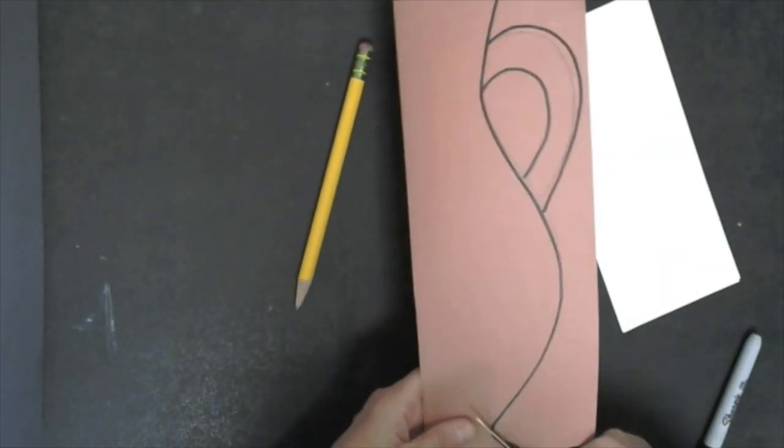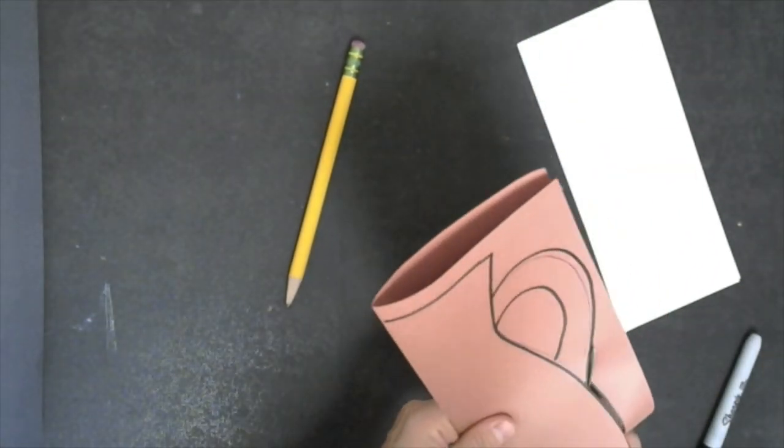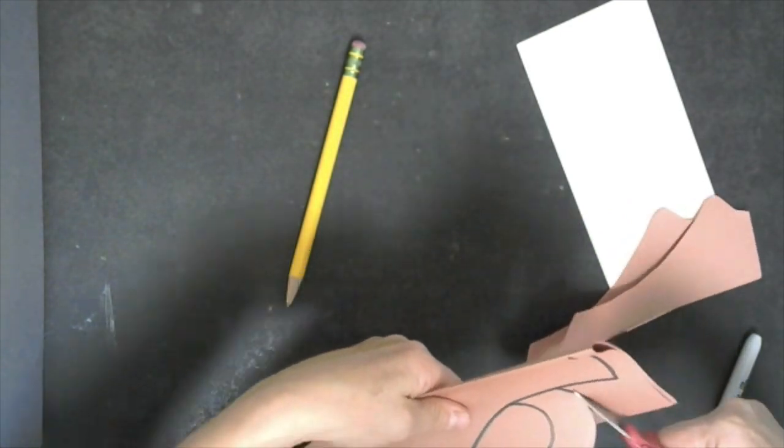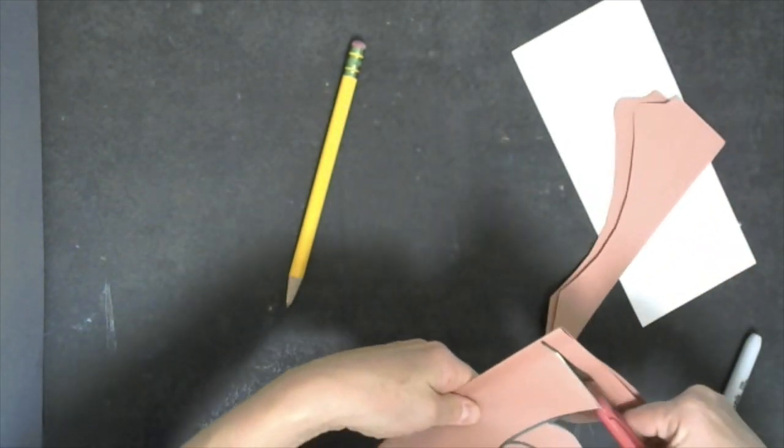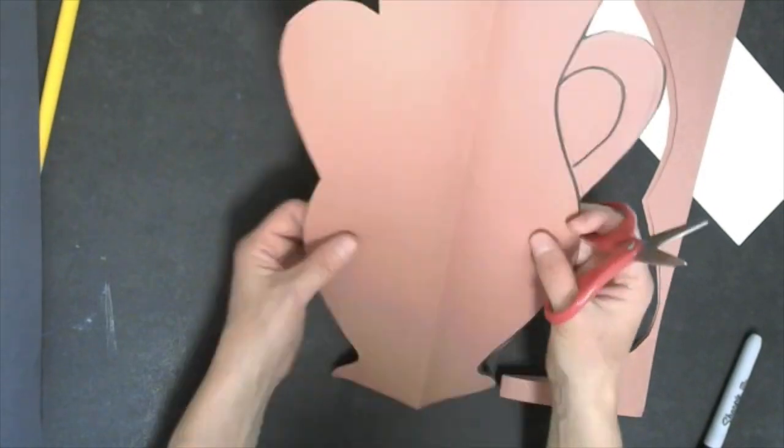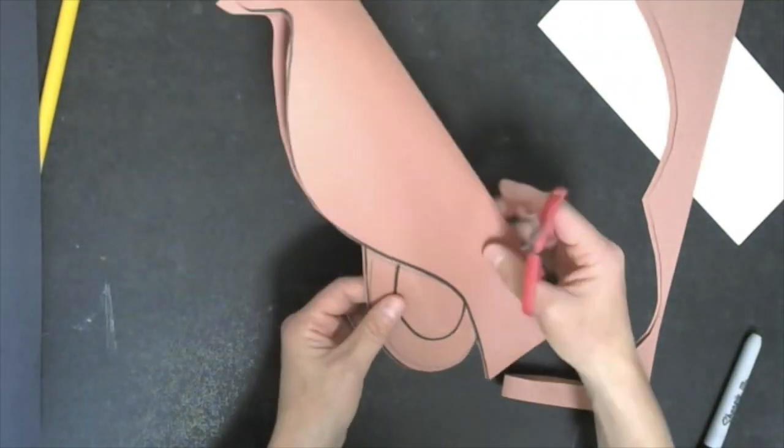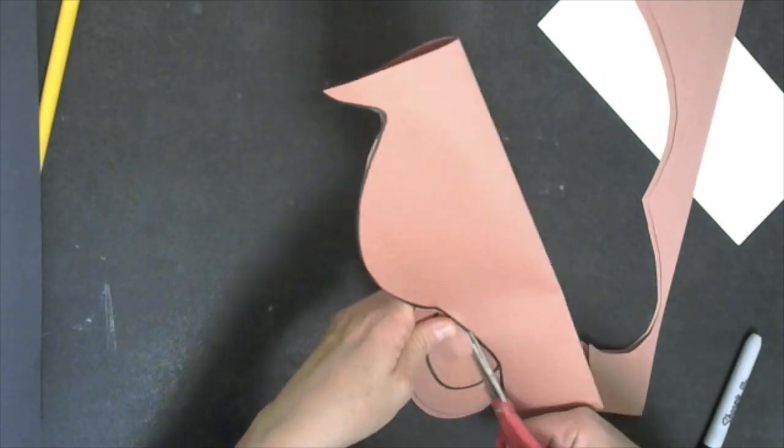We're going to fast forward this a little bit. You're going to cut this out and this is why it was important to make sure that you start on that fold so that you don't end up with two separate pieces. You have one piece. You fold it again so that you get that little space.